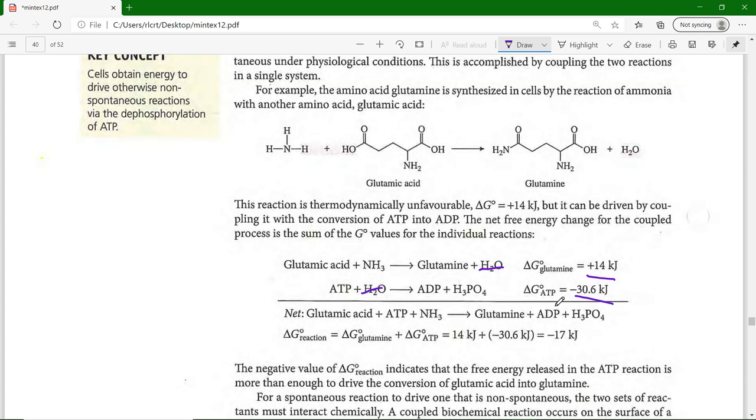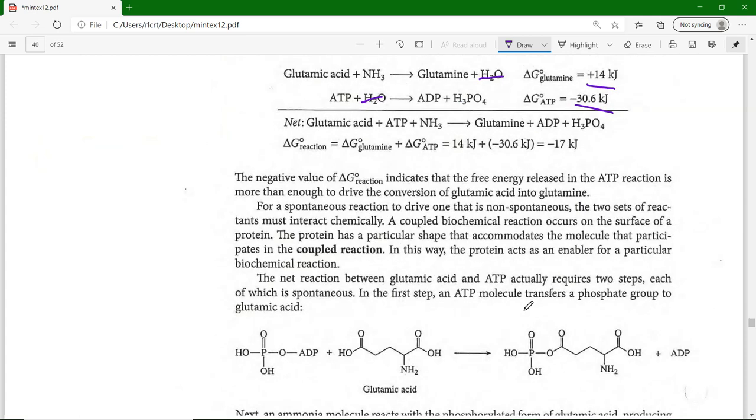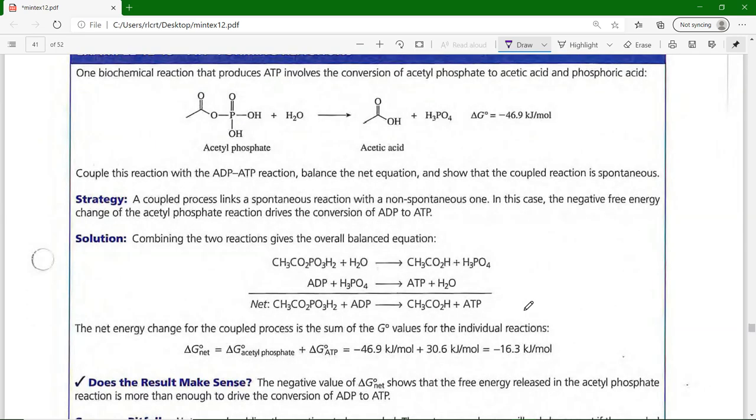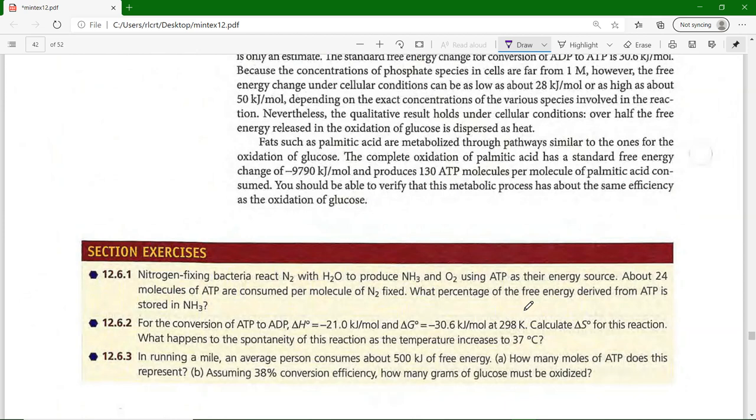If you combine those together, the H₂O is an intermediate and it's going to cancel out. So I got glutamic acid + ATP + NH₃ → glutamine + ADP + H₃PO₄. What you do, just like what you did with Hess's law way back when, is you just add the two values of ΔG°. If you add those values you get -17 kilojoules, so you have made a process, coupled or joined together two processes into one, and in so doing have made something spontaneous that otherwise wouldn't be. For a spontaneous reaction to drive one that is non-spontaneous, the two sets of reactants must interact chemically, and you get what's called a coupled biochemical reaction.